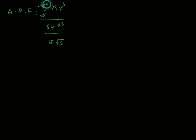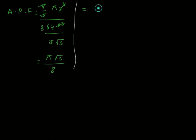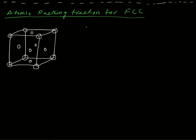Simplifying this term, we get atomic packing fraction equals π√3/8, which equals 0.68, meaning 68% of the space is filled in the BCC unit cell.